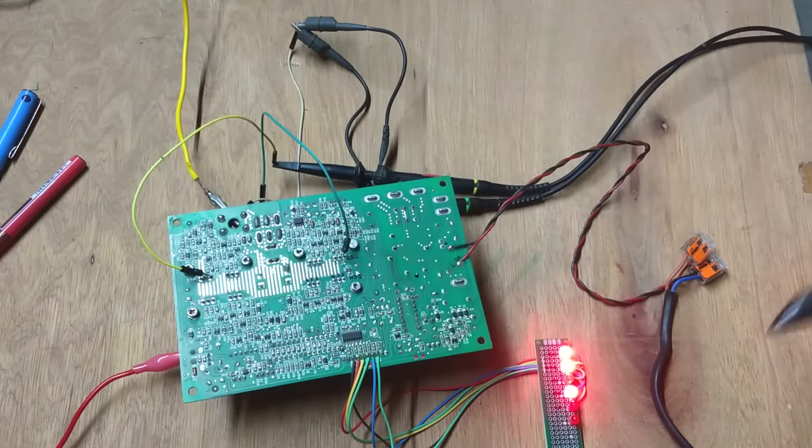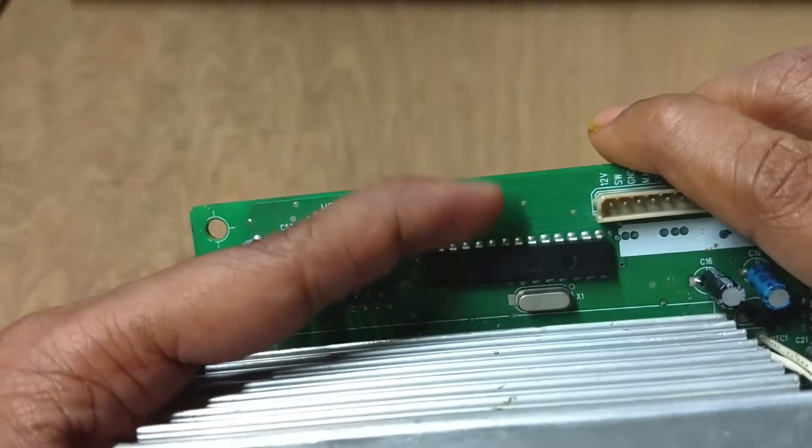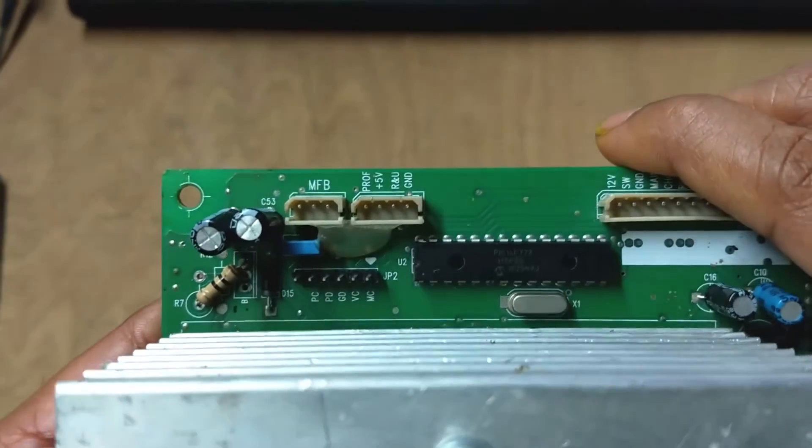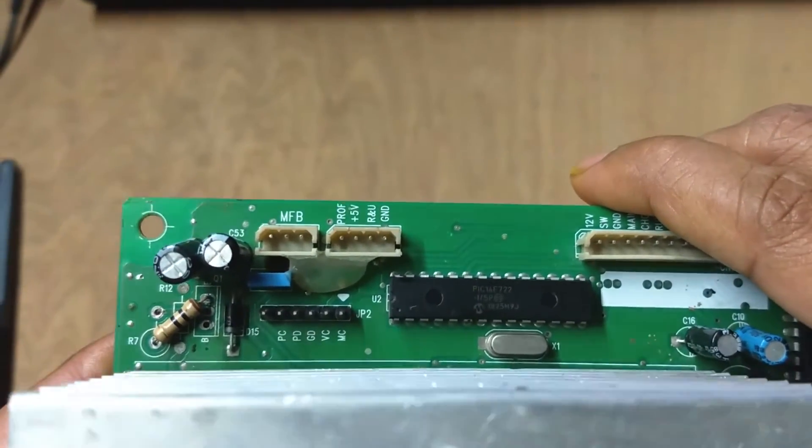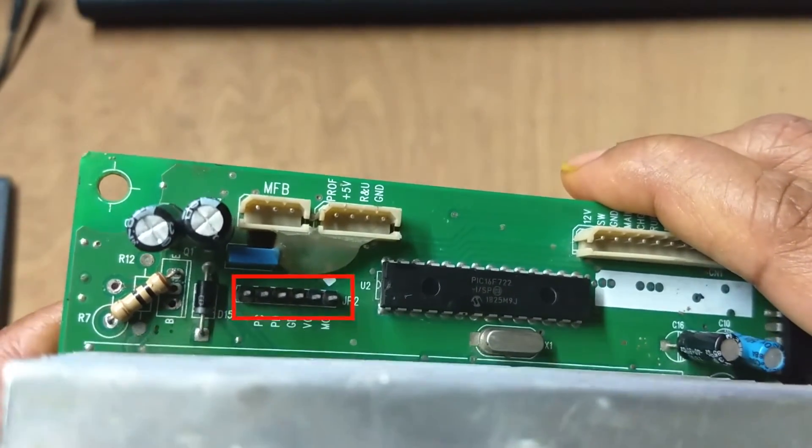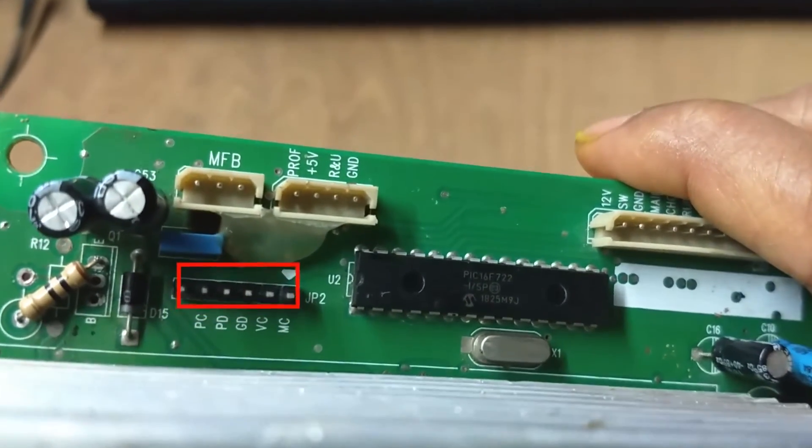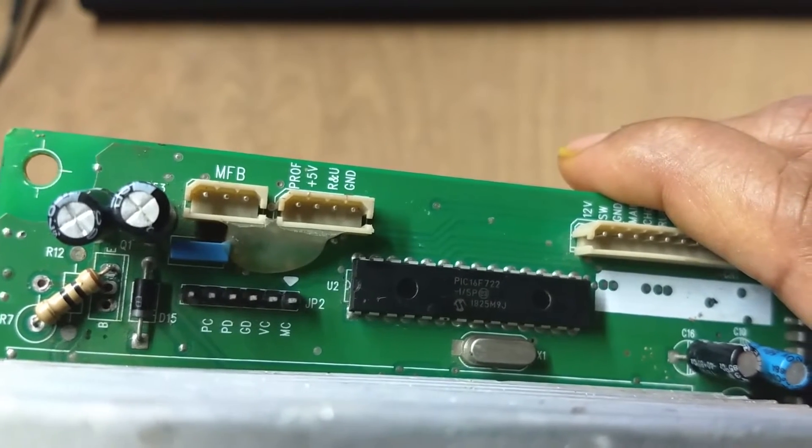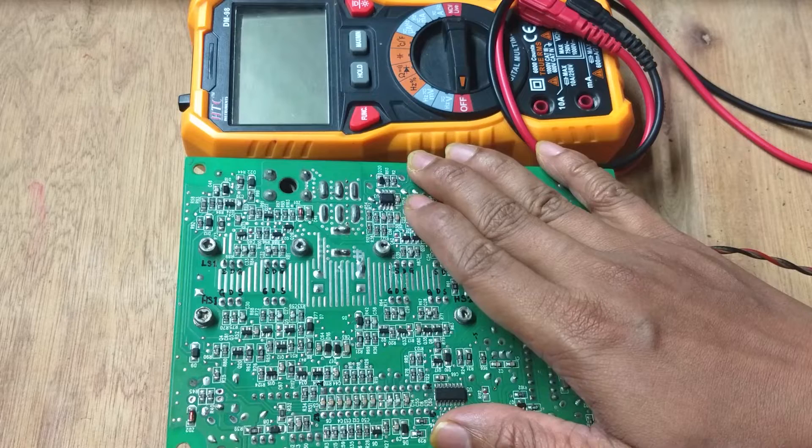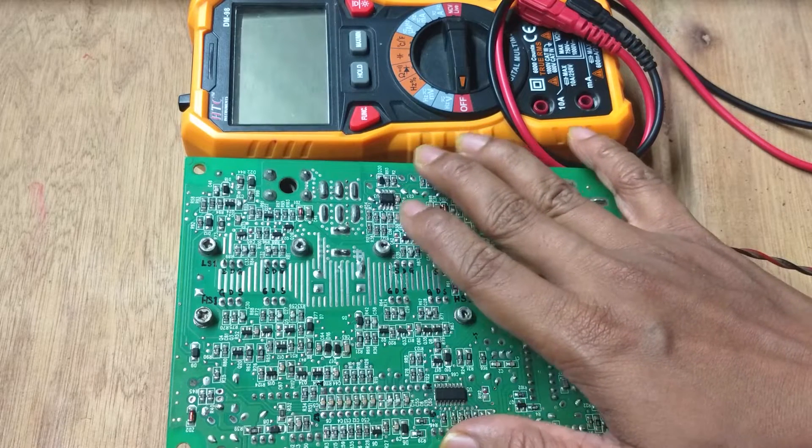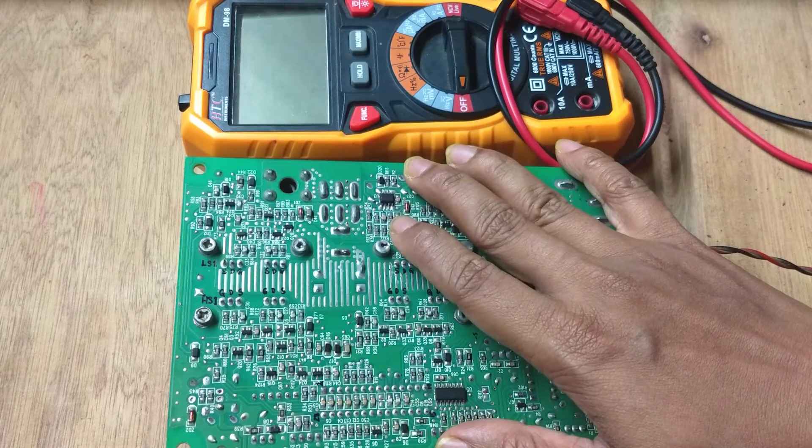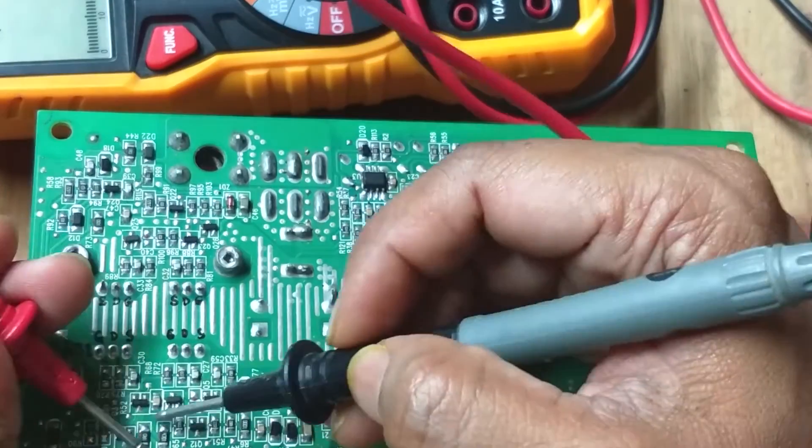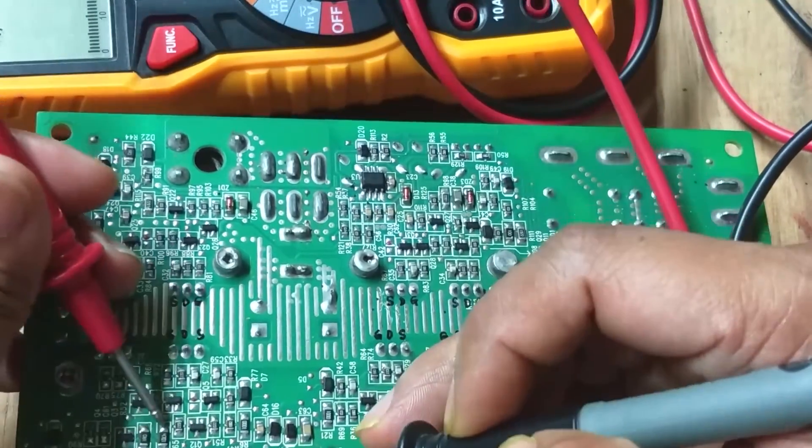The microcontroller is soldered on the PCB, but the good thing is that there is a programming header provided here, so I can easily upload my own code into the microcontroller. It is essential because I want to convert it into a pure sine wave inverter. But before I go ahead to write the code, I need to have some knowledge about the circuit. After digging around for tens of hours, I managed to understand most of the parts of the circuit, and here is the block diagram of the whole system.